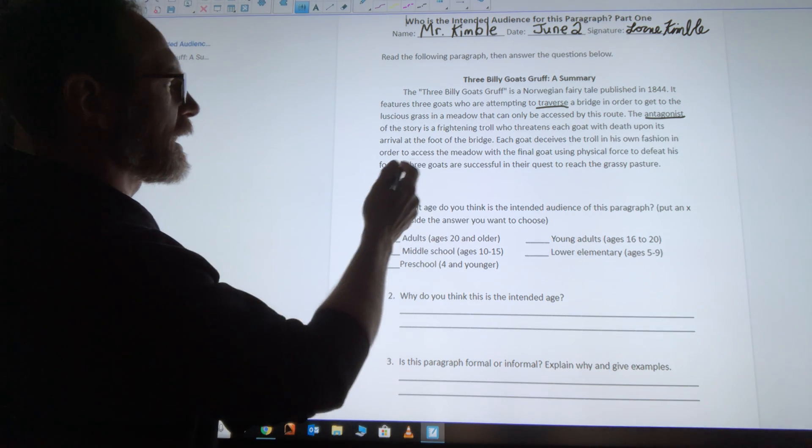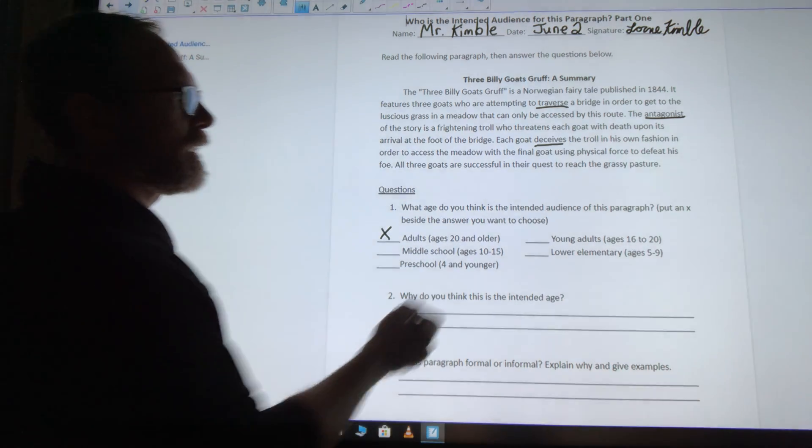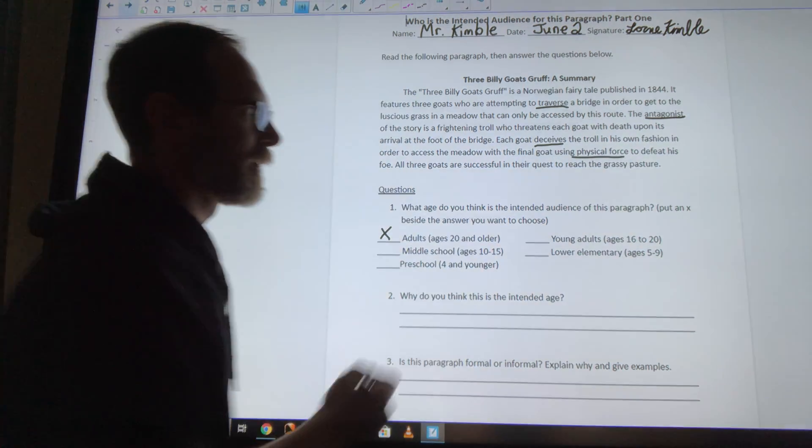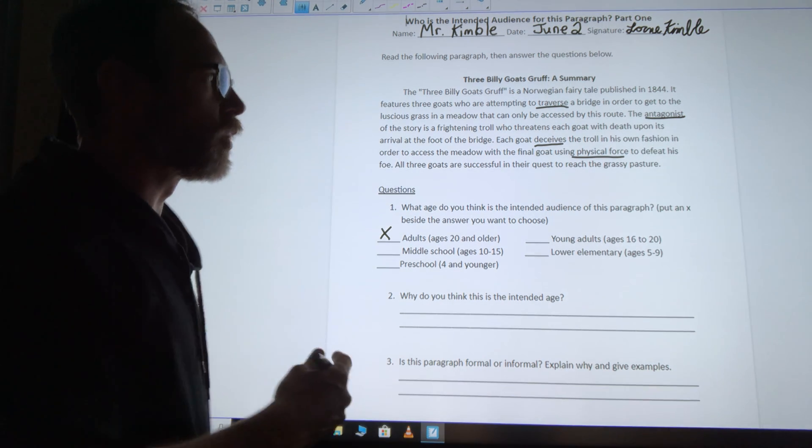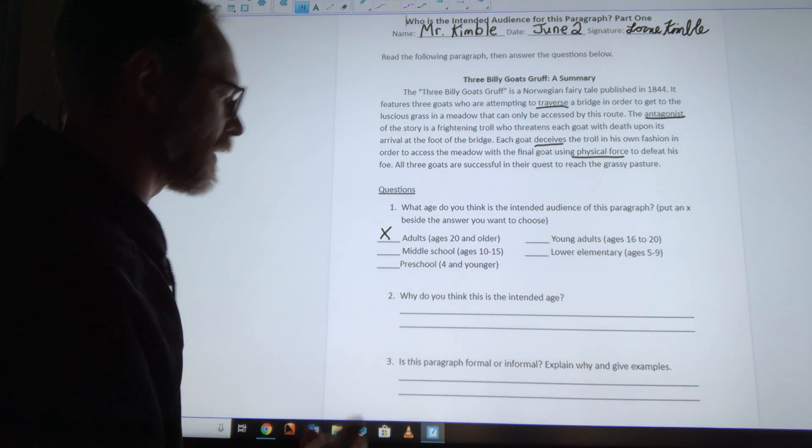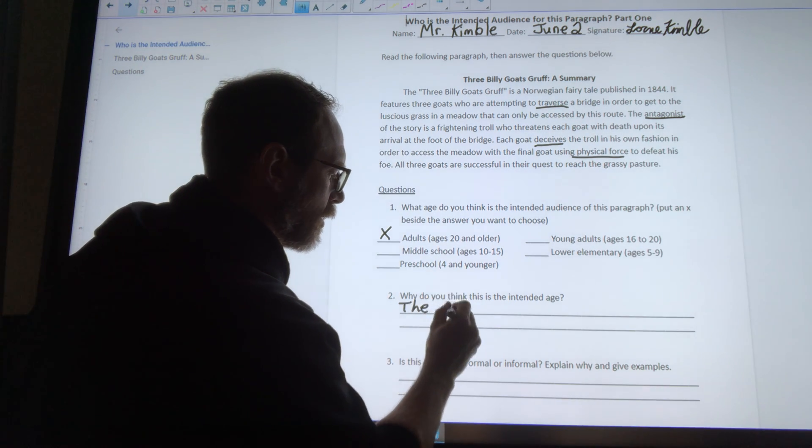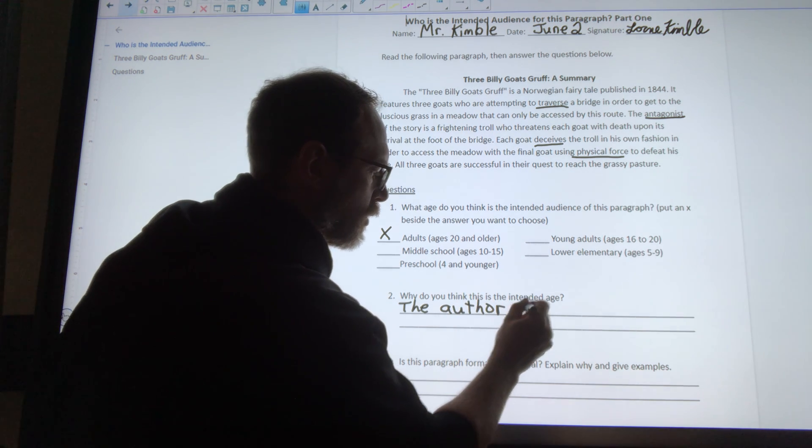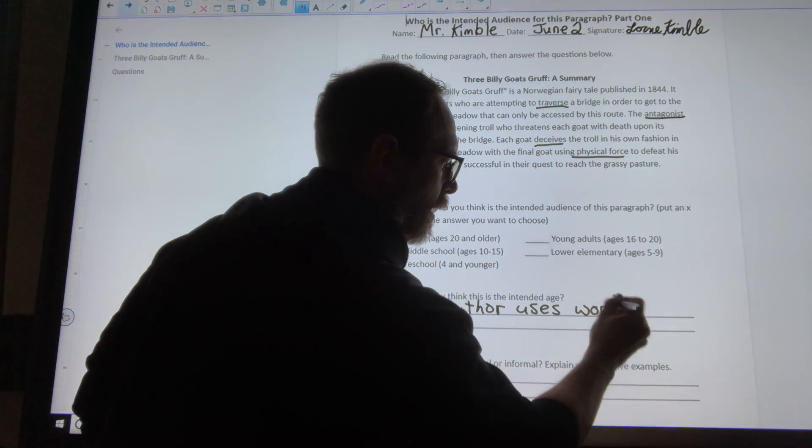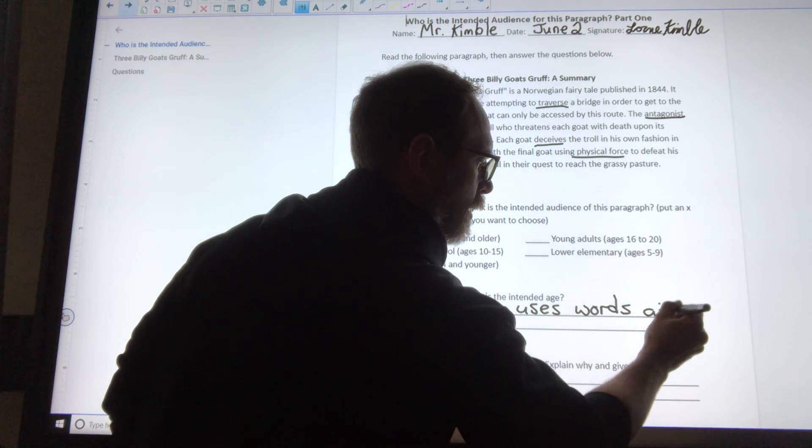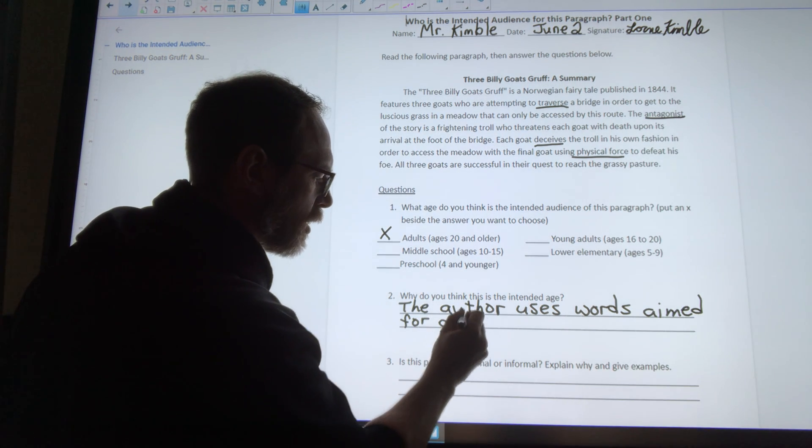He says that they deceive the troll and he uses physical force. All of these are words that I think would be aimed more at a mature kind of audience. I'm going to say the author uses words aimed for a mature audience.